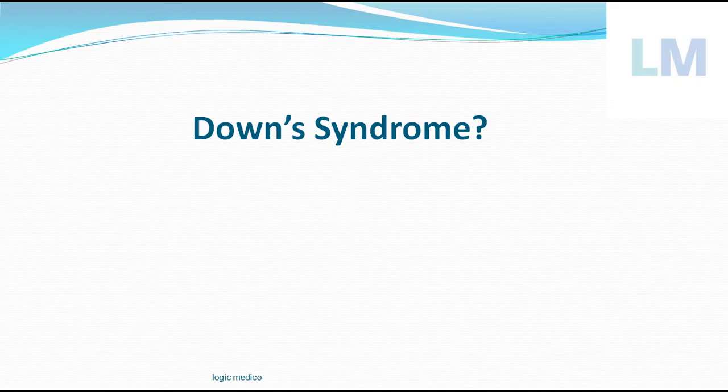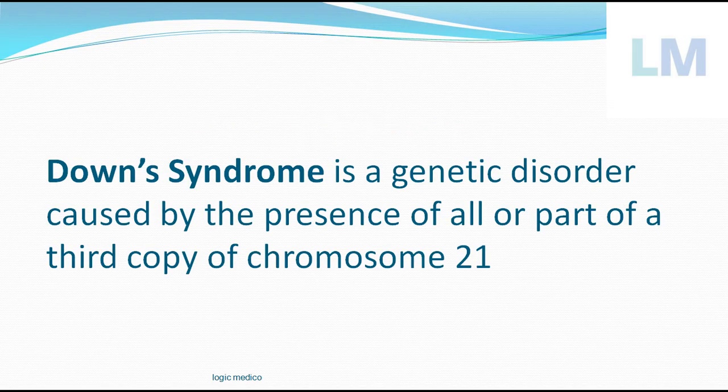I am talking about Down syndrome. So in this Down syndrome it is basically a genetic disorder caused by the presence of all or part of chromosome number 21, either as a whole or as a part. It is usually called trisomy 21.